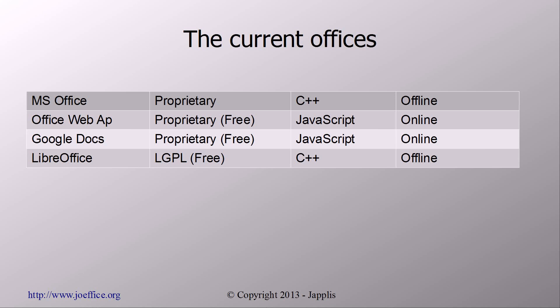As you can see, office suites are either online or offline. Then you have Office which has both, but it's not the same implementation. One is written probably in C++, the other one is part of C# and part of JavaScript. And most of them are written either in C++ or in JavaScript.